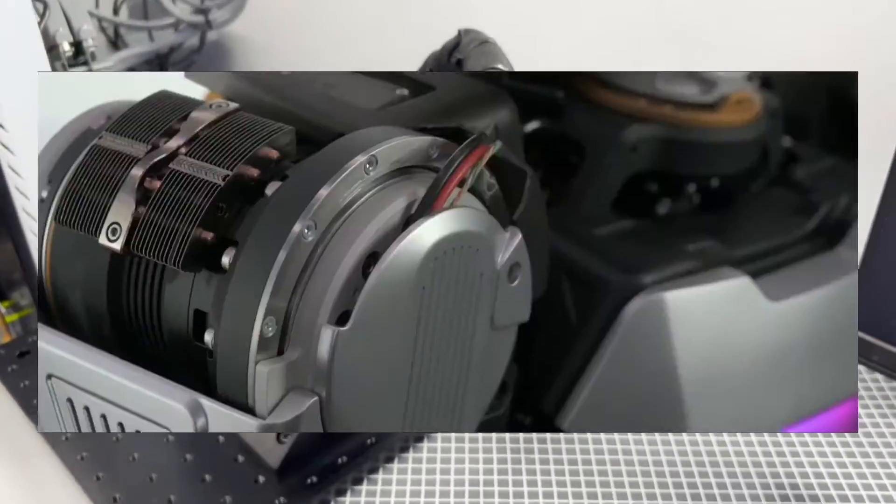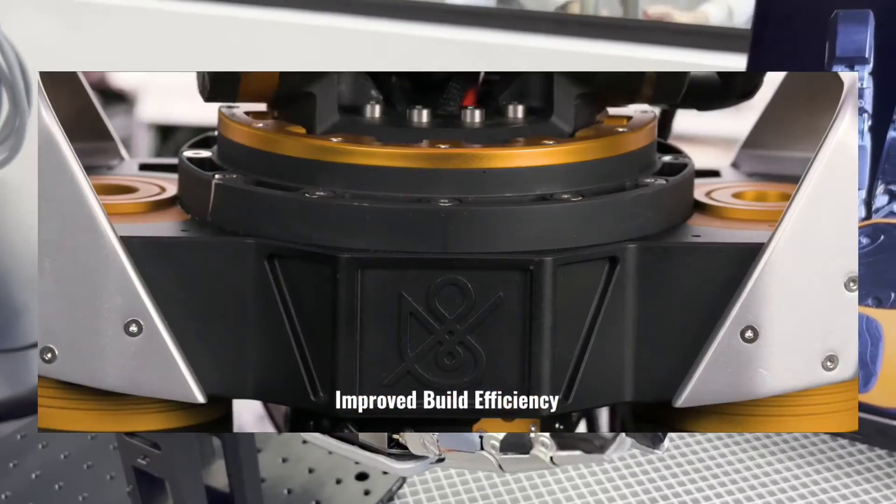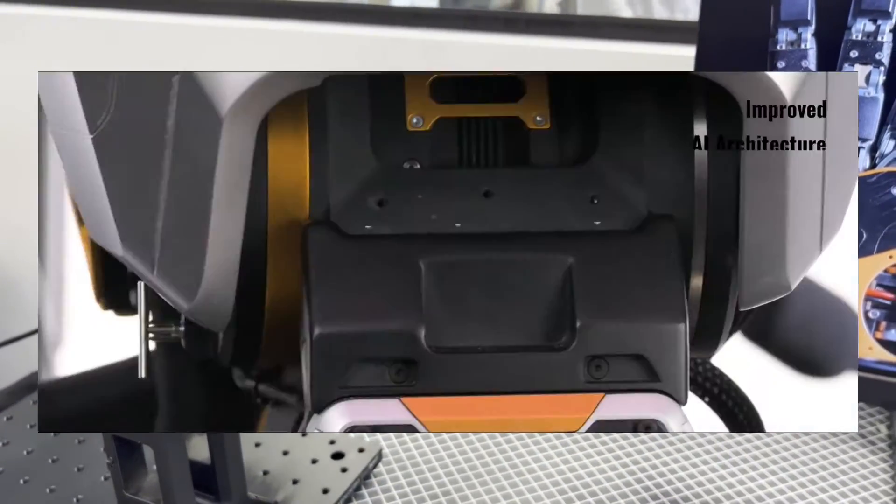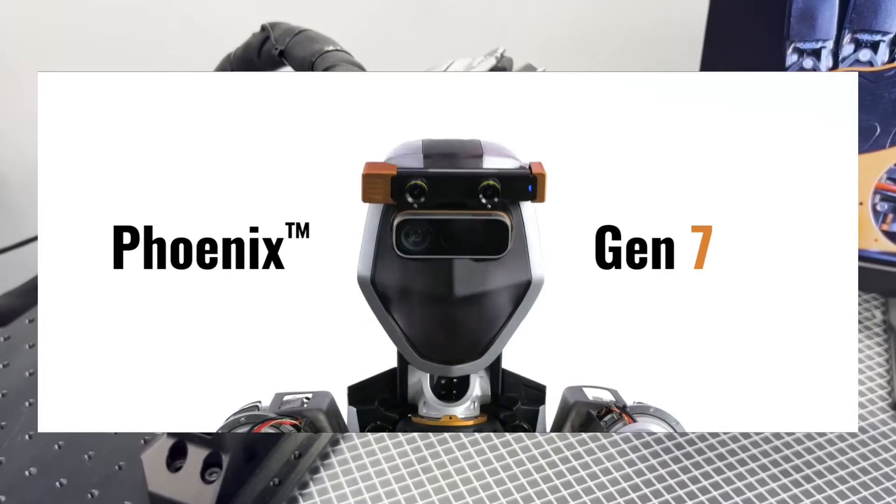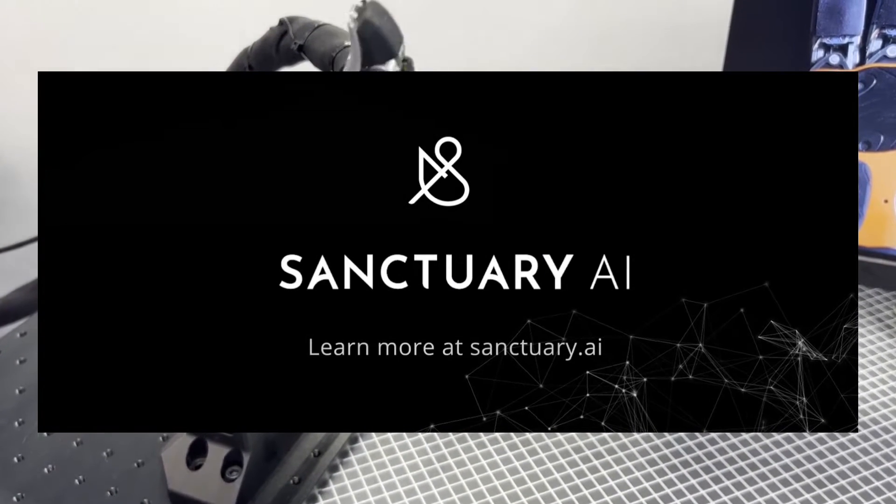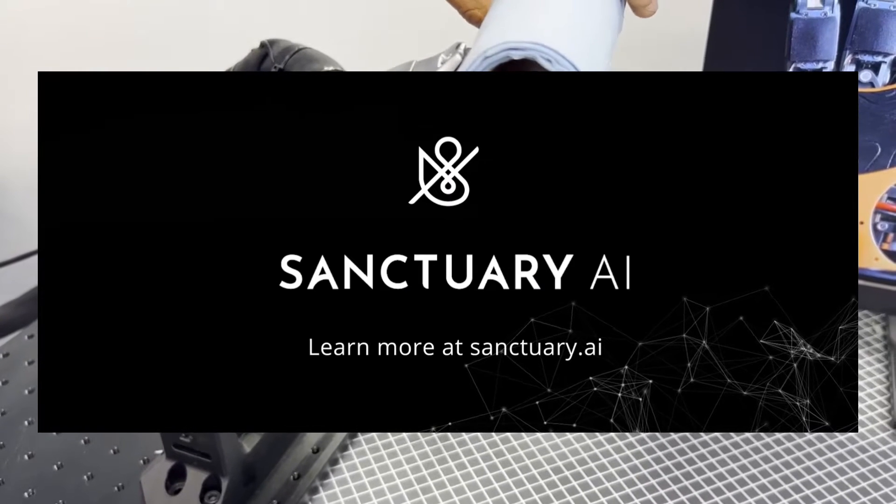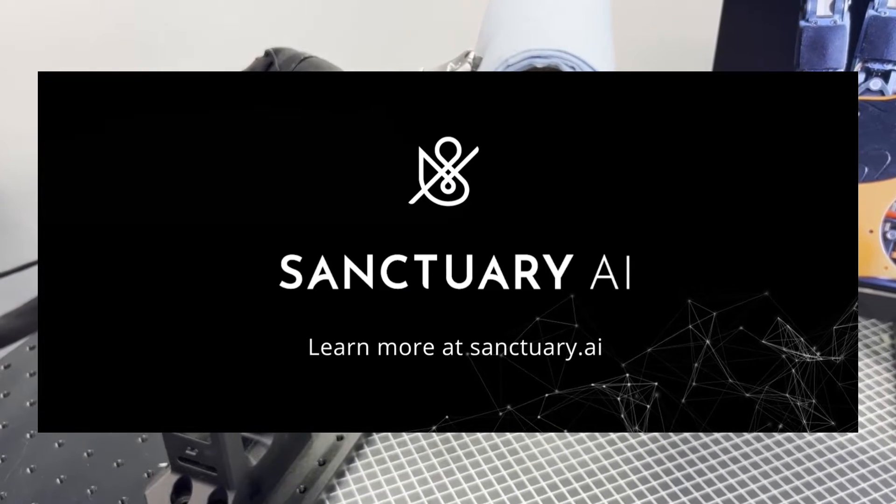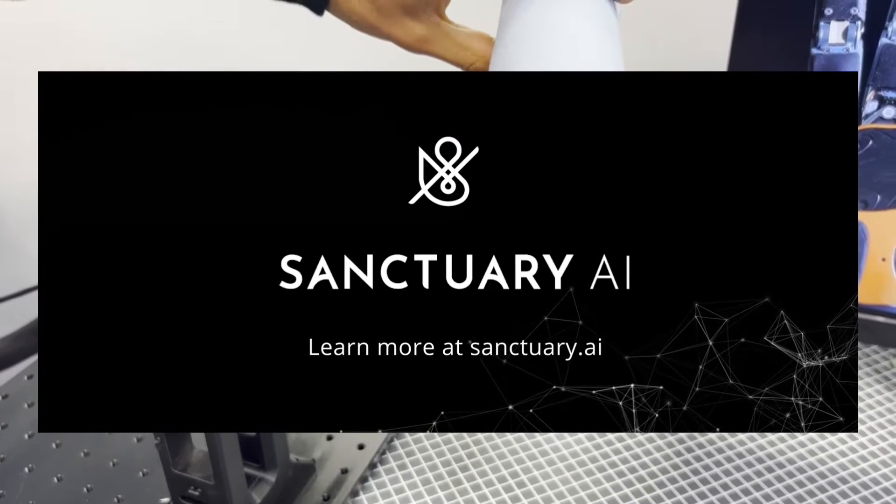Traditionally, humanoid robots have grabbed headlines for their impressive physical capabilities, their parkour skills, or their ability to maneuver through complex environments. But Sanctuary believes that true innovation lies in artificial intelligence. They argue that for robots to be truly helpful, they need to be intelligent and adaptable.